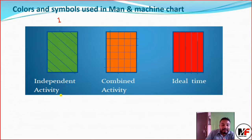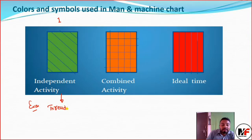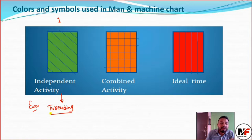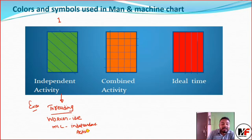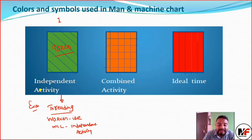In the man and machine chart, its own symbols are used. The first symbol is independent activity. Independent activity occurs when, for example, on a lathe machine a threading operation is being carried out using a lead screw — in that case there is no manual involvement. The machine works independently while the worker is idle. Independent activity is represented by green color with a 45-degree red line indicator.